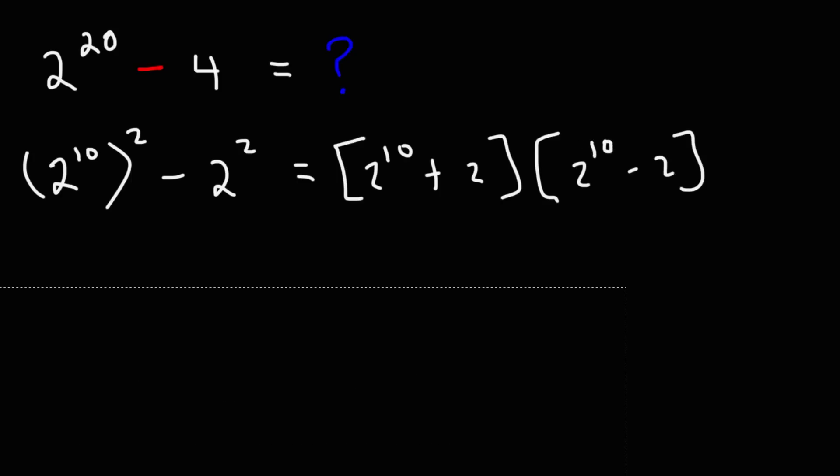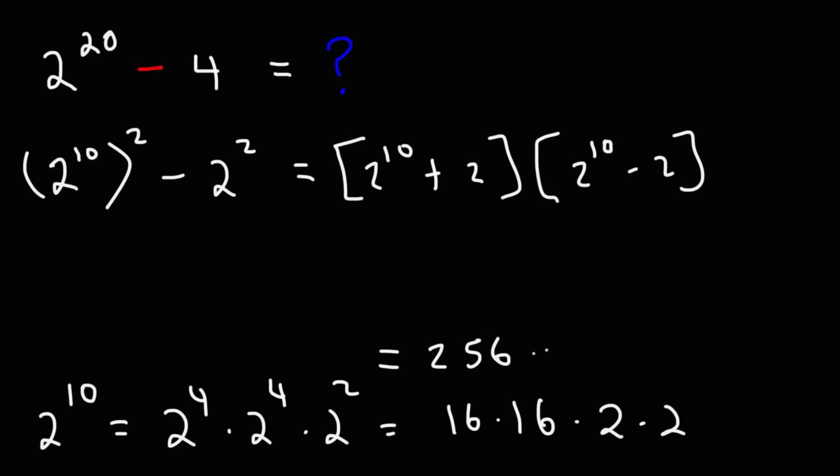Now what is 2 raised to the 10th power? 2 to the 10 we can break into 2 to the 4 times 2 to the 4 times 2 squared. 2 to the 4th power: 2 times 2 times 2 times 2, if you multiply 2 four times you get 16. So we have 16 times 16, and 2 squared is 4, but I'm going to write that as 2 times 2. 16 times 16 is 256. If you double 256, 250 plus 250 is 500, 6 plus 6 is 12, you get 512.